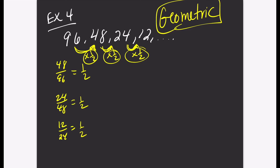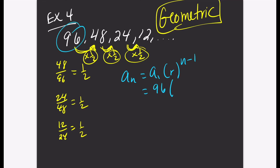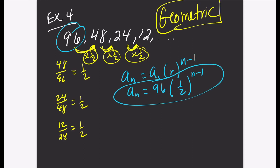Let's find the nth term or explicit rule. A sub n equals a sub 1 times r to the power of n minus 1. A sub 1 is 96, r is one half, and the exponent is n minus 1. For geometric there's nothing to simplify, so you are done: a sub n equals 96 times one half to the power of n minus 1.